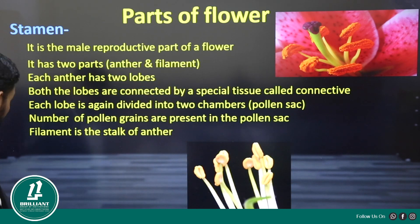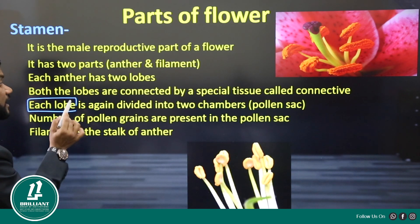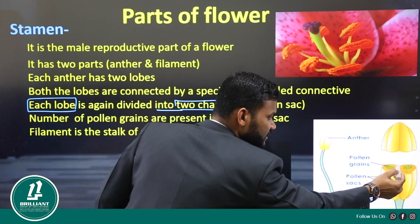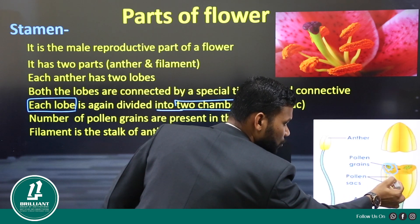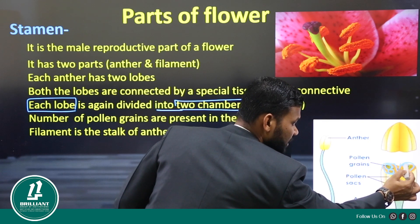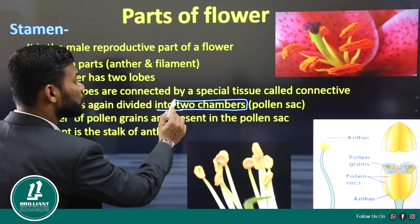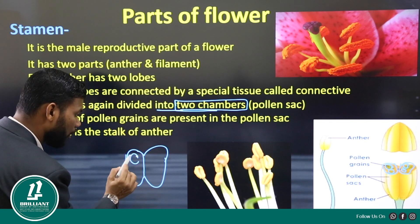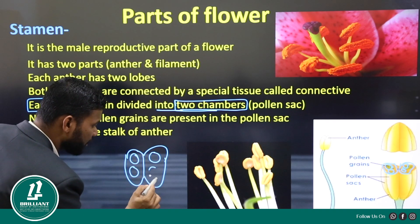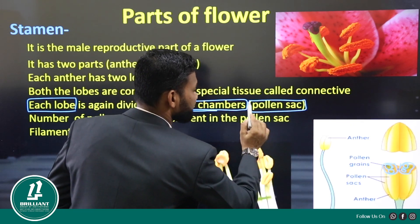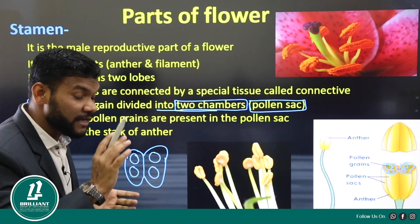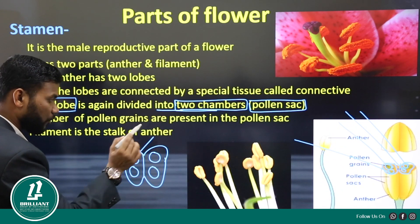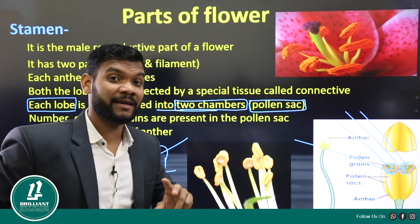Each lobe is again divided into two chambers. You can see in the diagram: this is one lobe, divided into two chambers, and the second lobe is also divided into two chambers. These chambers are called pollen sacs. So in each anther there will be four pollen sacs — one, two, three, four.